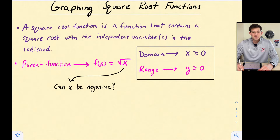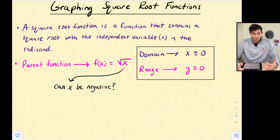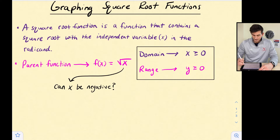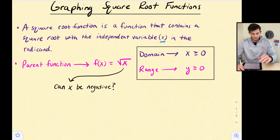In this video we're going to talk about a square root function. A square root function is a function that contains a square root with the independent variable — and remember the independent variable is x — and that's going to be in the radicand, or under the radical, under the square root.